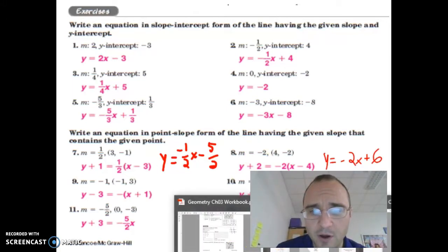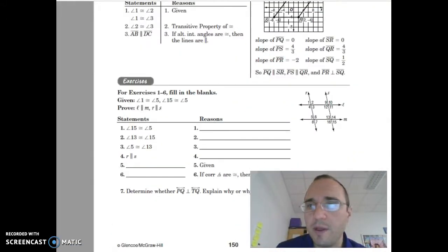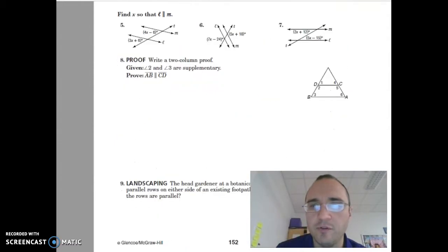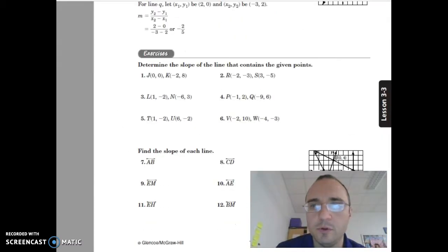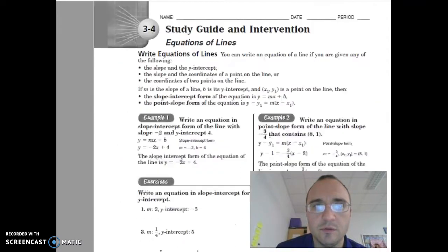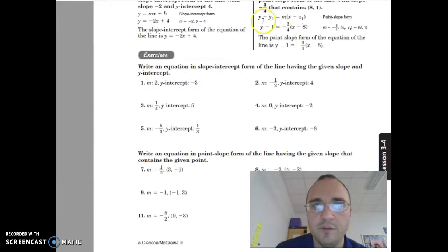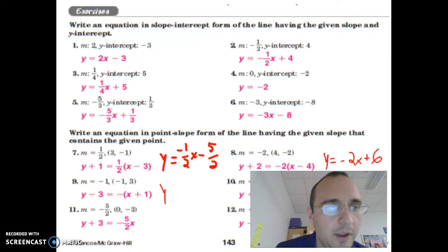So point slope method involves the equation for point slope. And the equation for point slope looks like right here. Here's the equation for point slope form. Y minus y equals m times x minus x. We're going to go back to this equation here and keep going.